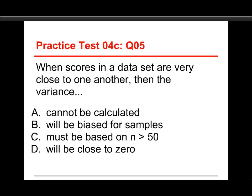Okay, this gets us to question five, the last one. When scores in a data set are very close to one another, then the variance... A cannot be calculated, will be biased for samples, must be based on samples of N greater than 50, or will be close to zero.